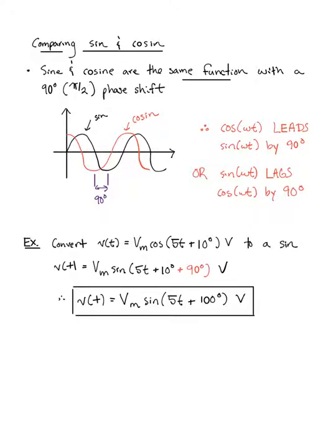Based on this, let's do an example. Convert Vm cos(5t + 10°) to a sine. Noting that cosine leads sine by 90, if we're converting a cosine to a sine, we add 90 degrees to the argument. So Vm cos(5t + 10°) is equivalent to Vm sin(5t + 100°).